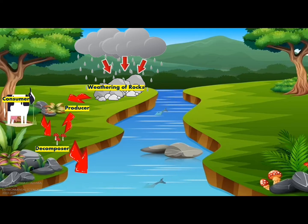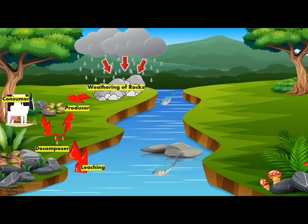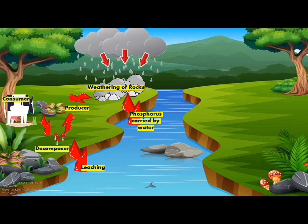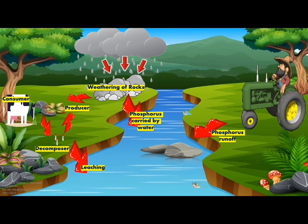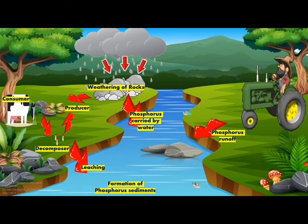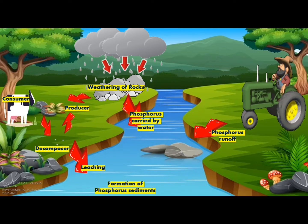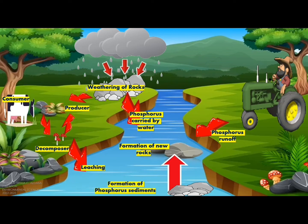Not all phosphorus is absorbed by the soil. Some of it goes to the water stream through leaching, and some phosphorus released during weathering is carried by rainwater to waterways. Human activity like farming also contributes to phosphorus deposits in bodies of water, as farmers use fertilizers made of artificial phosphorus, and runoff from farms occurs during rain. Eventually, phosphorus sediments form on the sea or ocean floor and later become new rocks.